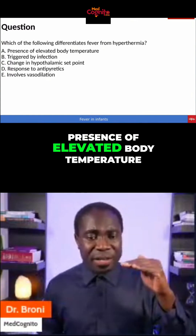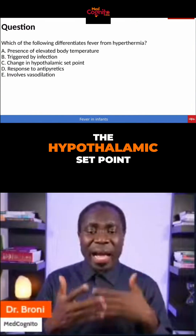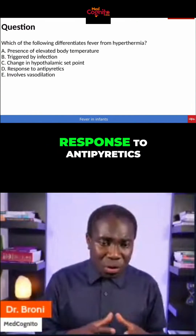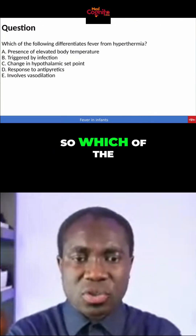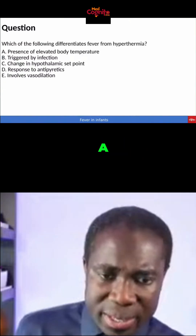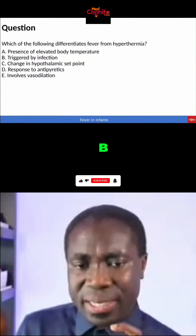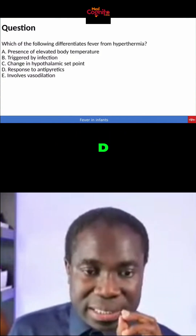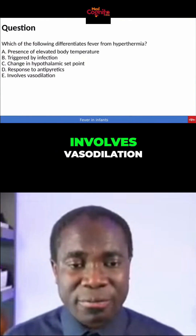A, presence of elevated body temperature. B, one is triggered by infection. C, there's a change in the hypothalamic set point in one of them. D, response to antipyretics. And E, involves vasodilation.